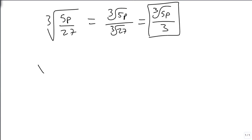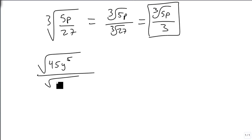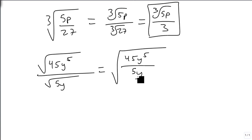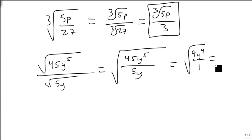It also works the other way. Suppose we have the square root of 45y to the 5th over the square root of 5y. Since they're both square roots, we can combine them to be the square root of 45y to the 5th over 5y. We can reduce our fraction, so we get 9y to the 4th on top and 1 on the bottom. We're always assuming our variables are greater than or equal to 0, so we don't need absolute values. The square root of 9 is 3, the square root of y to the 4th is y squared, and the square root of 1 is 1, so the answer is 3y squared.